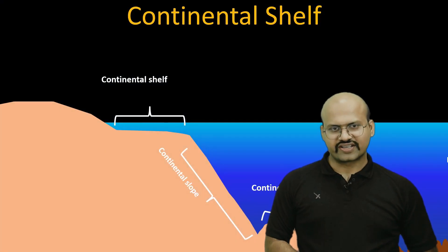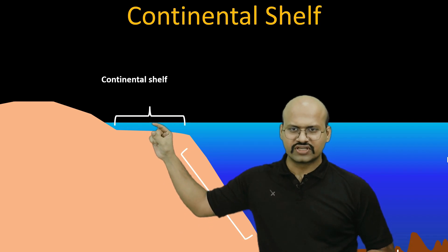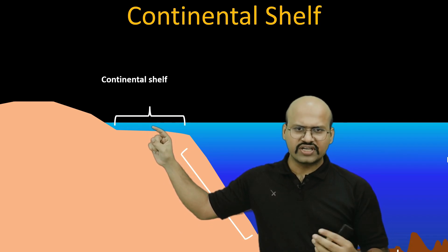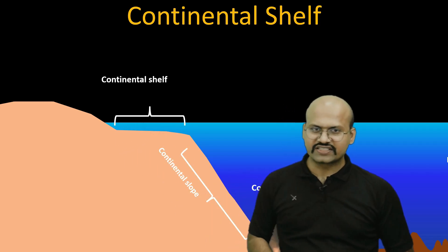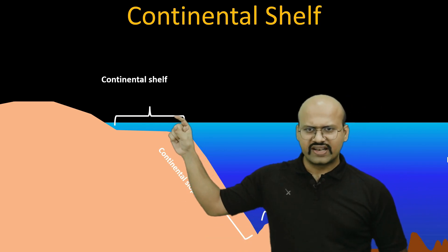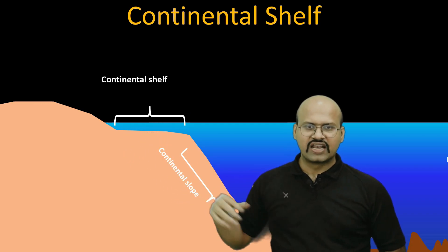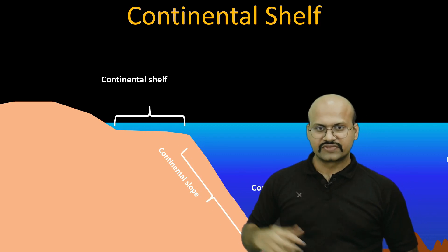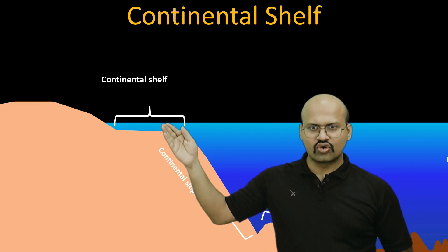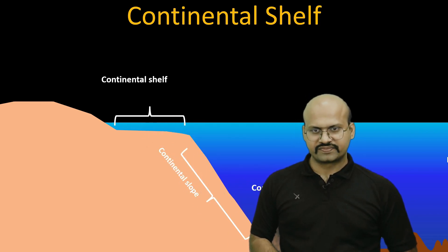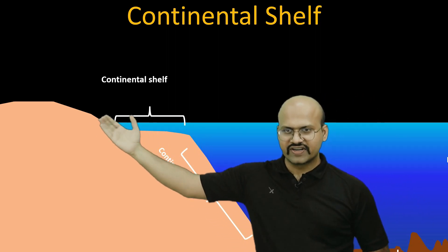The continental shelf is the submerged part of the continental crust where the depth of the ocean does not exceed 200 to 300 meters. The slope of the land is very low — it appears as a flat region. Because of the shallow depth, sunlight can easily illuminate this region, which is why we find a large number of organisms living here. In fact, all marine plants live in the continental shelf zone, and coral reefs are also found here. Nutrients are supplied by ocean currents as well as rivers through erosion.